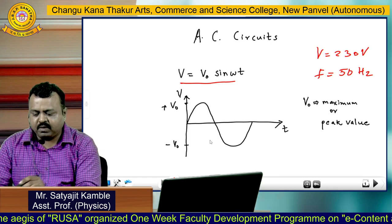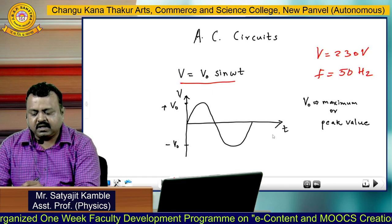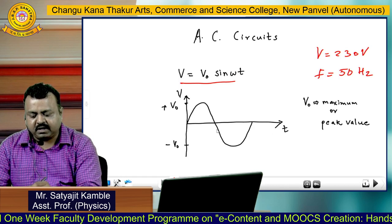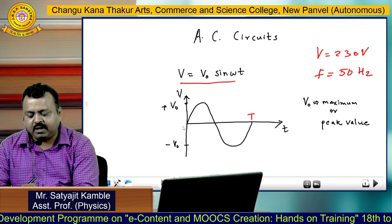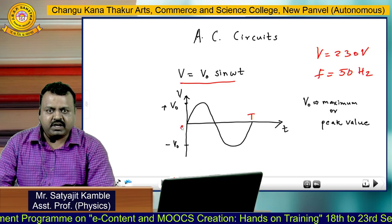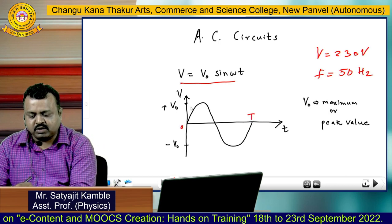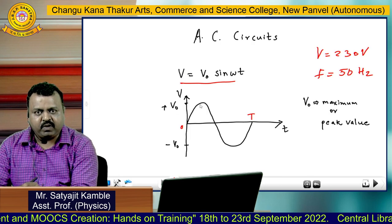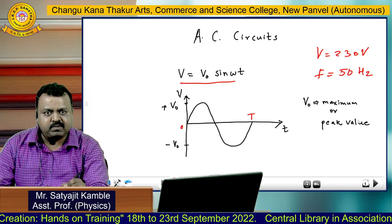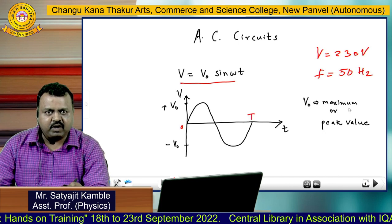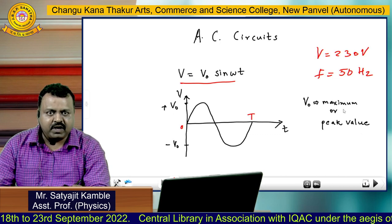So in the graph here, it is a graph of V versus T, that is voltage versus time. You can see that this voltage is fluctuating, and this is called a complete cycle — this is one complete cycle of alternating voltage. During that one complete cycle, the point where it reaches the maximum value — here you can see V naught — that maximum value is called the peak value or maximum value of voltage.